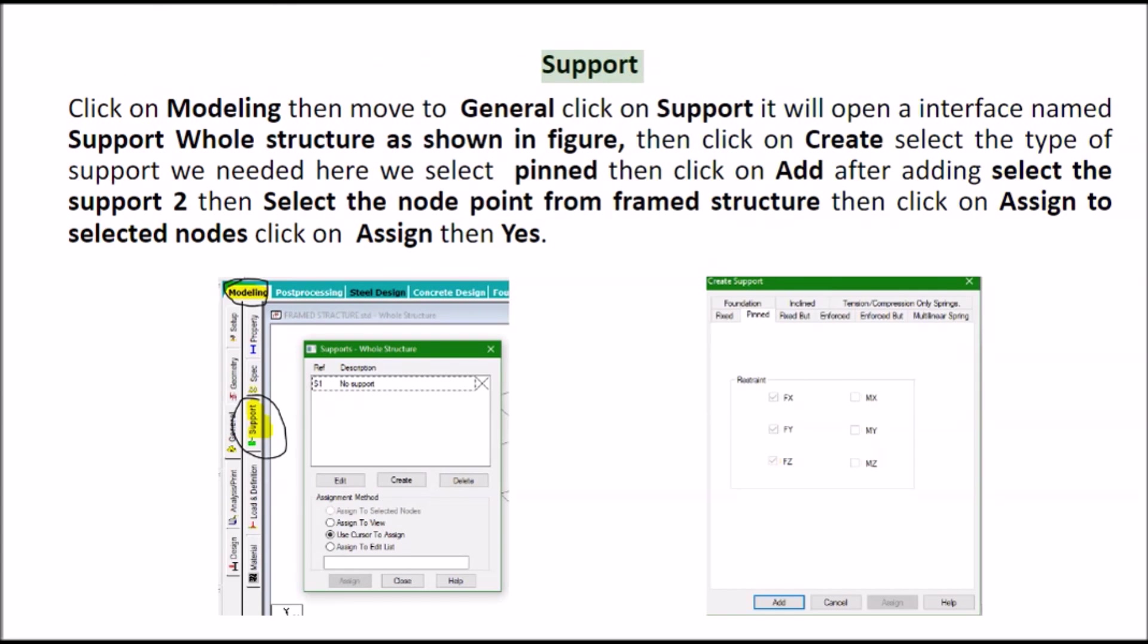Support. Click on modeling then move to general click on support it will open interface named support whole structure as shown in figure. Then click on create select the type of support we needed here we select pin then click on add after adding select the support to then select the node point from framed structure then click on assign to selected nodes click on assign then yes.